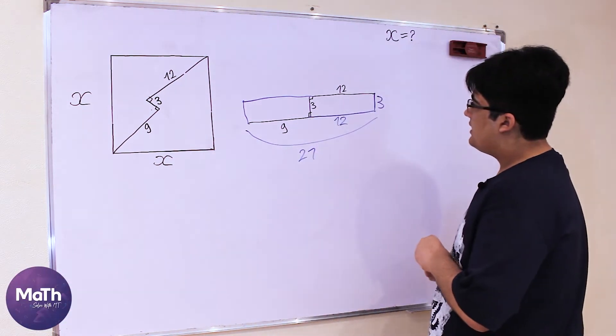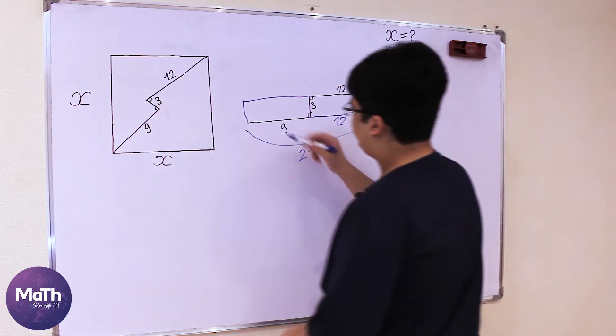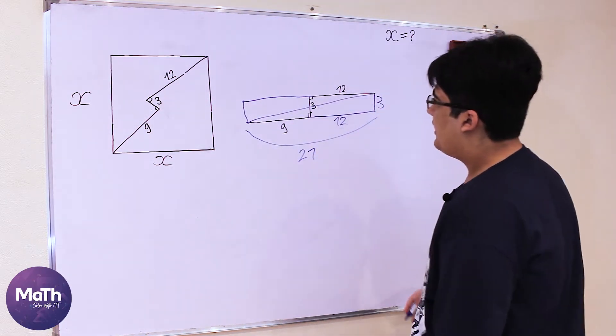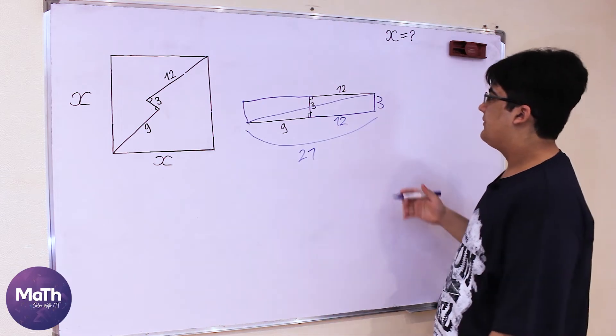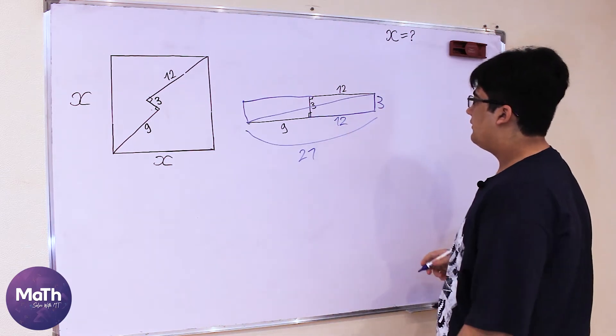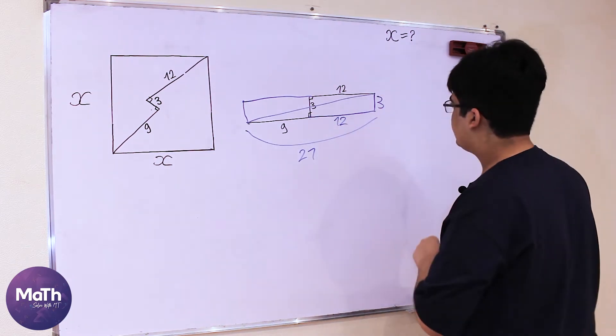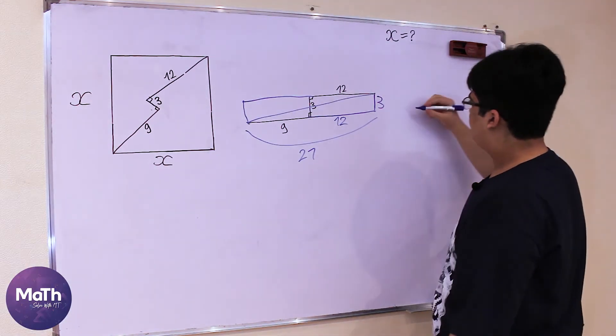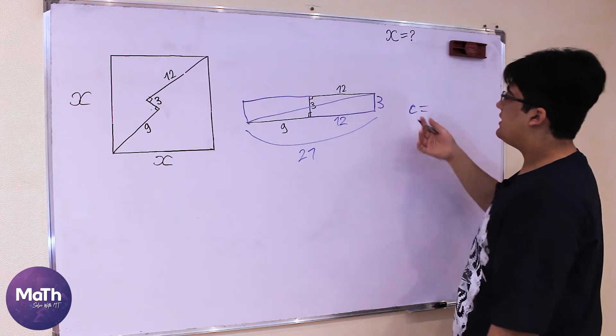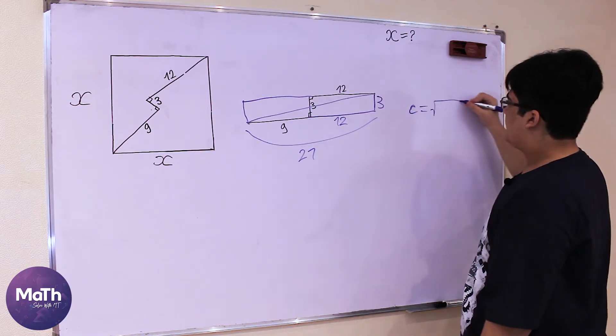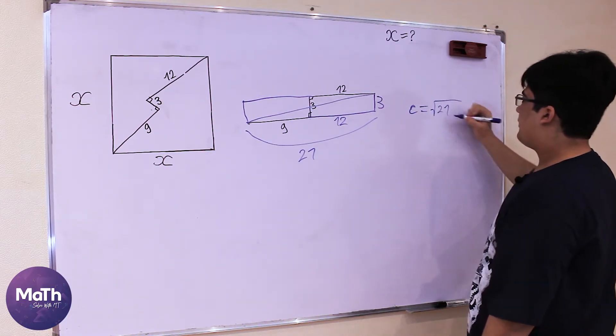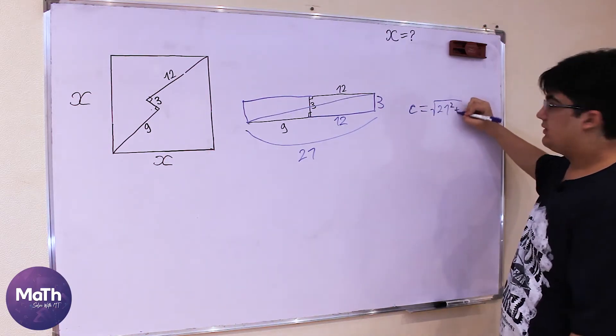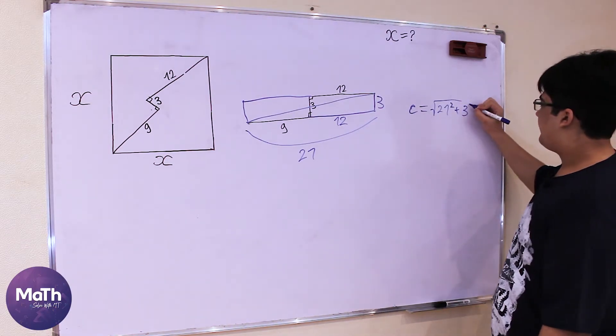We need to find the hypotenuse of this right triangle. The hypotenuse, let's call it C, equals the square root of 21 squared plus 3 squared.